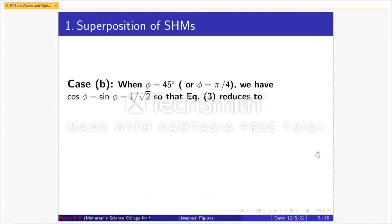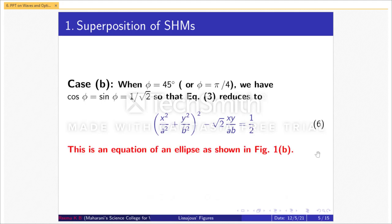Case B: when φ = 45° (π/4), we have cos φ = sin φ = 1/√2. Equation 3 reduces to x²/a² + y²/b² − √2·xy/(ab) = 1/2, considered as equation 6. This is the equation of an oblique ellipse, as shown in Figure 1b.